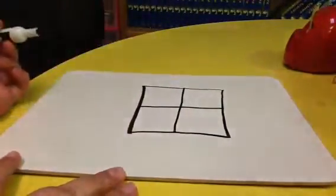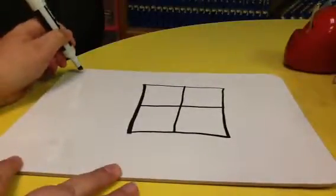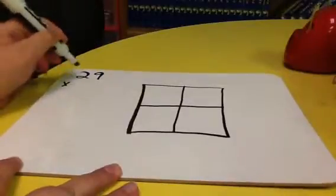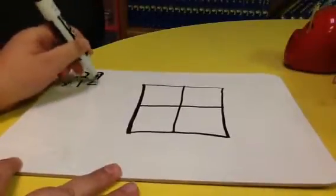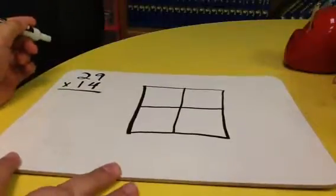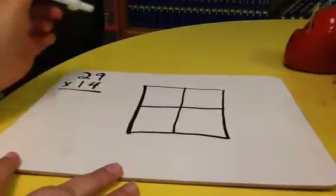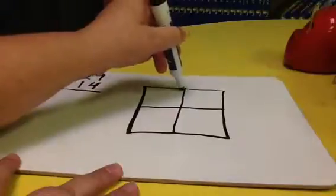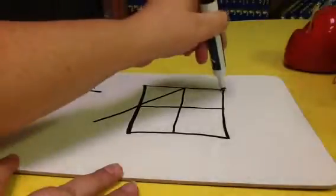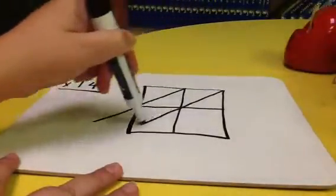So the number I'm going to be using for an example is 29 times 14, and to make our lattice I told the kids we cut each square like we would our grilled cheese into these little triangles.